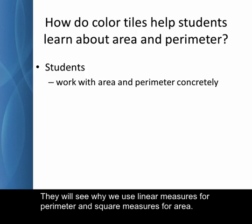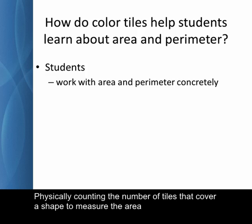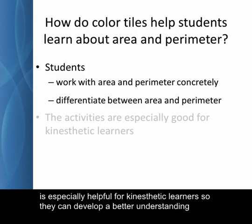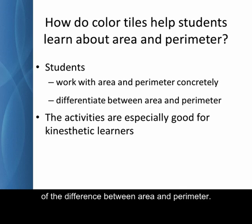They will see why we use linear measures for perimeter and square measures for area. Physically counting the number of tiles that cover a shape to measure the area and counting the tile sides around the outline of the shape to measure the perimeter is especially helpful for kinesthetic learners so they can develop a better understanding of the difference between area and perimeter.